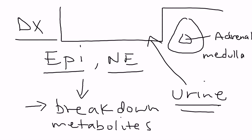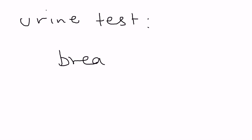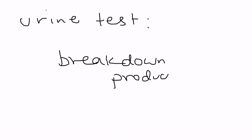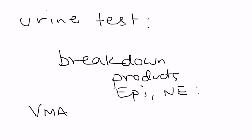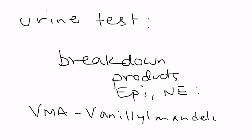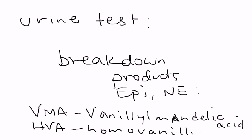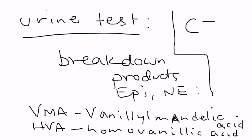These catecholamine breakdown products are very important and appear on almost every licensing exam. They are VMA and HVA. You perform a urine test checking for the breakdown products of epinephrine and norepinephrine. The first is VMA, which stands for vanillomandelic acid. The second is HVA, which stands for homovanillic acid. This is the diagnostic test for pheochromocytoma. Because it's a tumor, you will also need to do a CT of the abdomen.